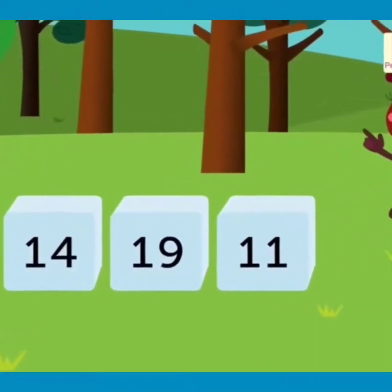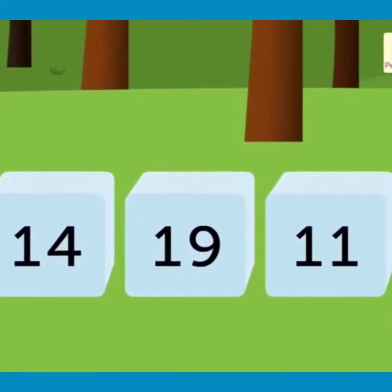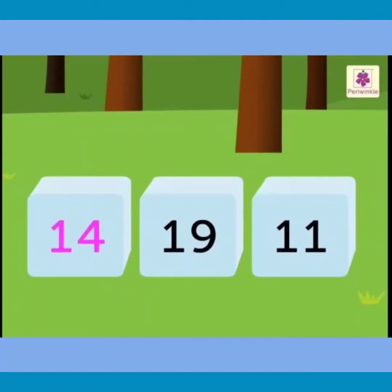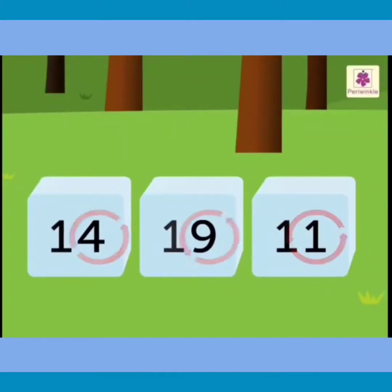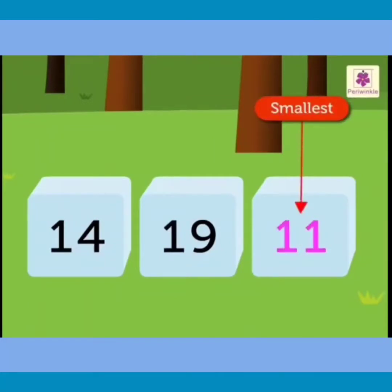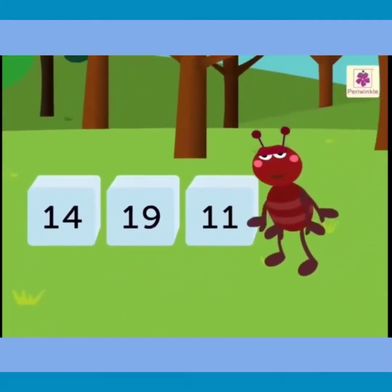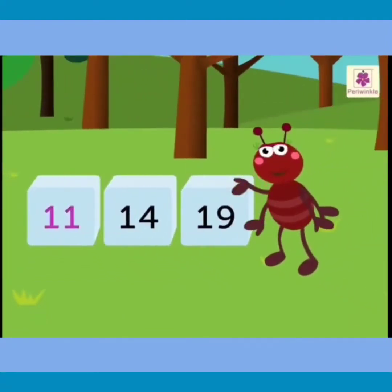Look, Tob got three new numbers to arrange in ascending order. They are 14, 19, and 11. There are four ones in 14, nine ones in 19, and one one in 11. So the smallest is 11 and the greatest is 19. Hence, the ascending order is 11, 14, 19.